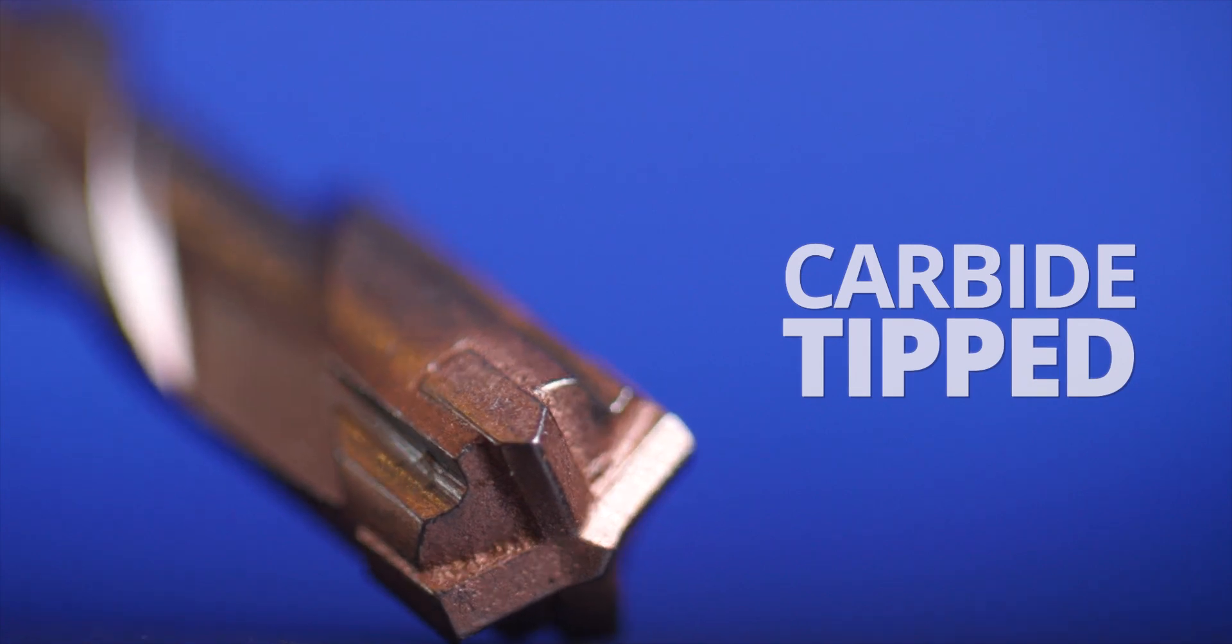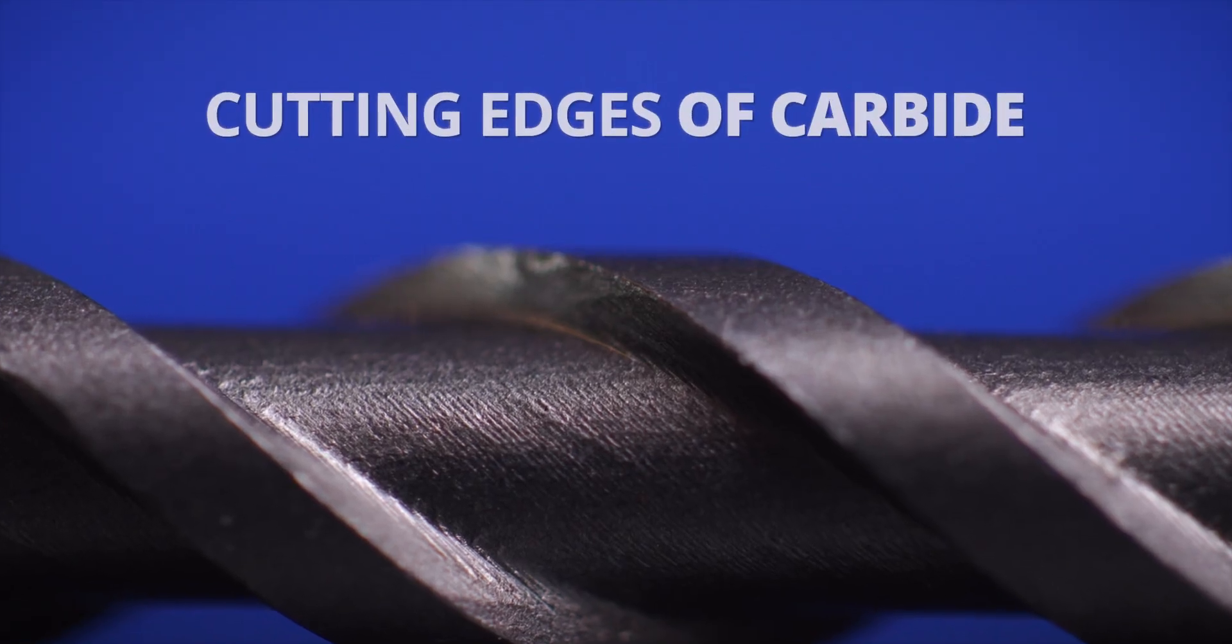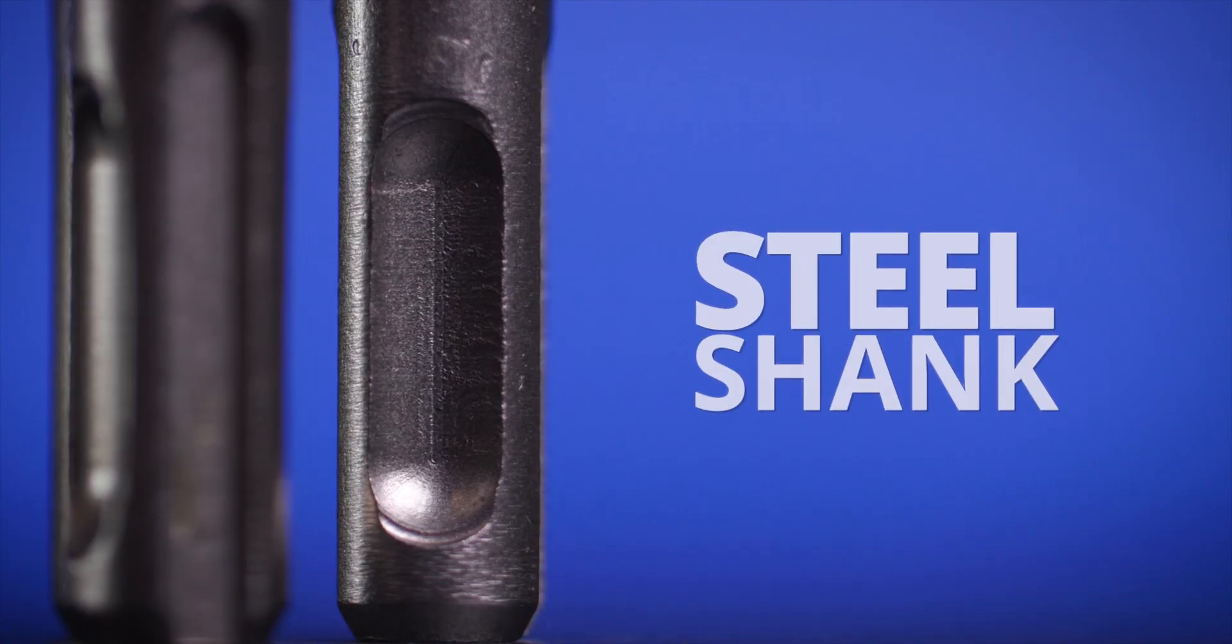These carbide tip drill bits feature cutting edges of carbide for wear resistance and a steel shank for toughness.